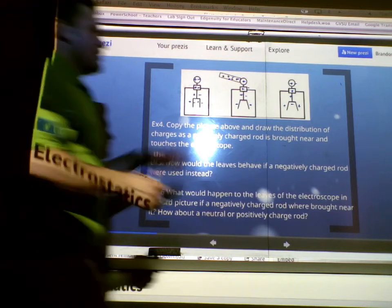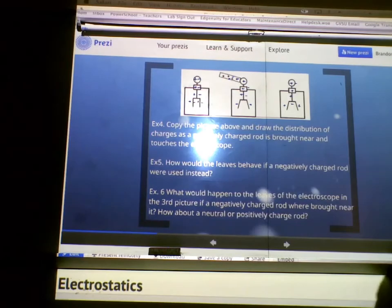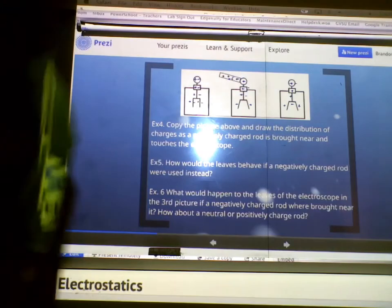Okay? We'd have negatives all over the place, evenly distributed around the 5 protons. So, the 5 positives. Does that make sense? Any questions?